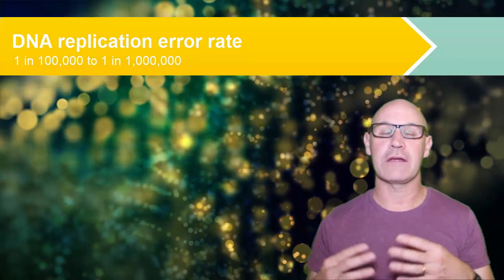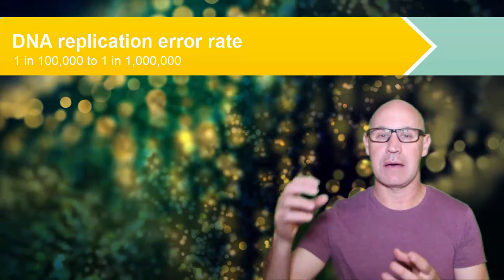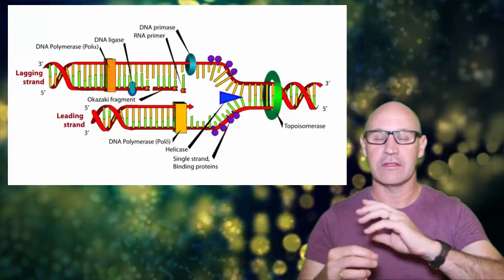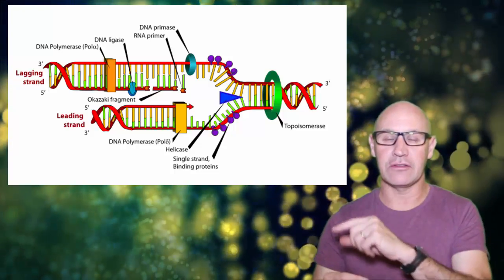And so that normally occurs around about 1 every 100,000 to 1 every 1 million bases, so still not very often. But what happens is the DNA polymerase proofreads the bases and the complementary bases that have been put down on the new chain, on the new strand.